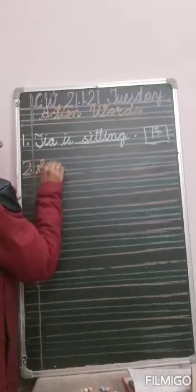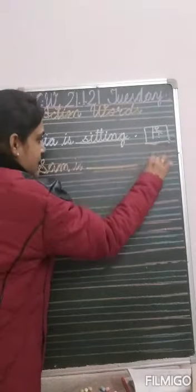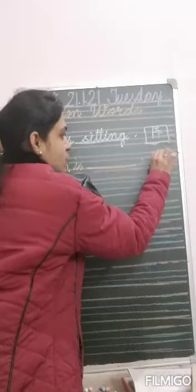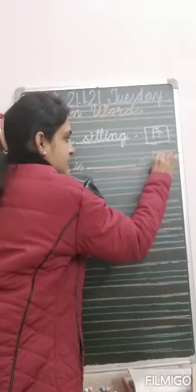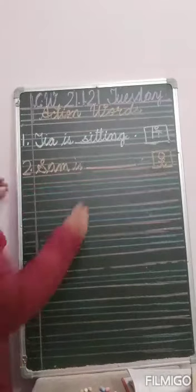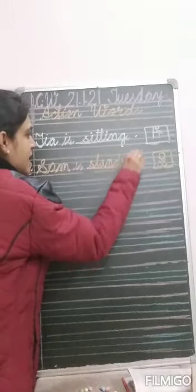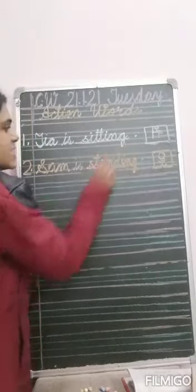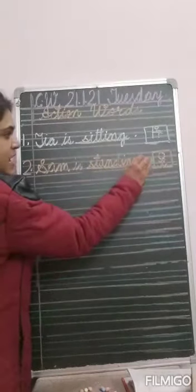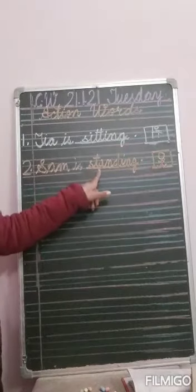Sam is dash. Now tell me, what is Sam doing? He is standing. Write down standing. S-T-A-N-D-I-N-G. Standing.